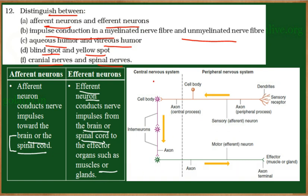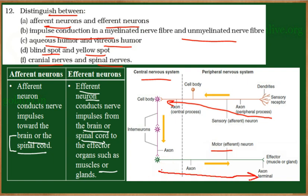Here we can see the central nervous system and the peripheral nervous system. Afferent neurons are also called sensory neurons — from the sensory receptors or sense organs, they carry information towards the brain or spinal cord. Efferent neurons are also called motor neurons; they carry information from the CNS to a muscle or a gland.